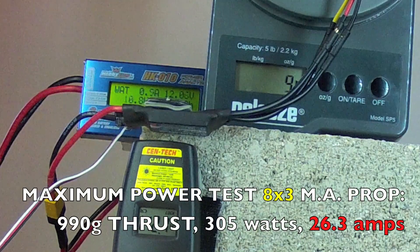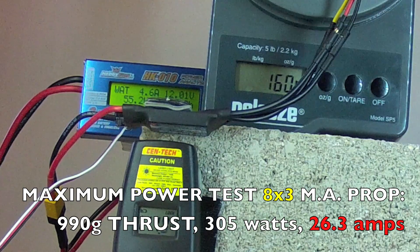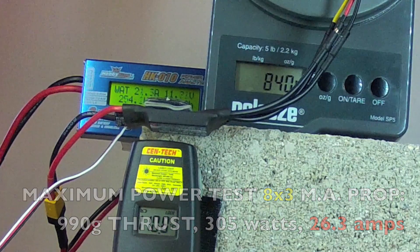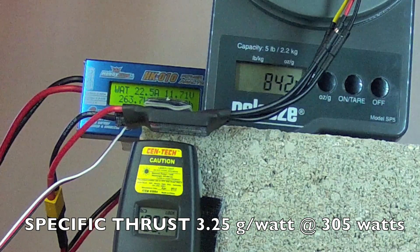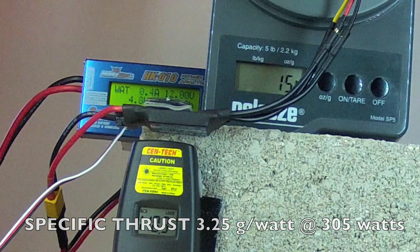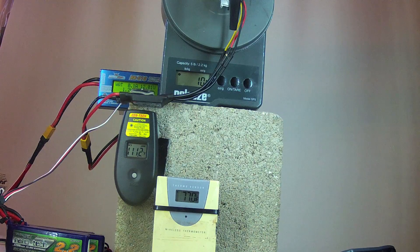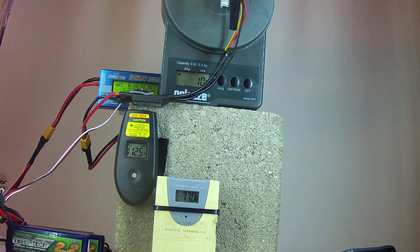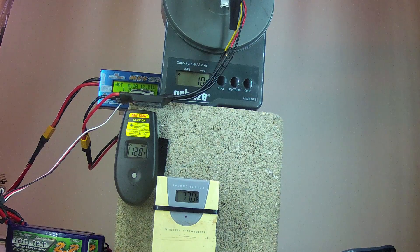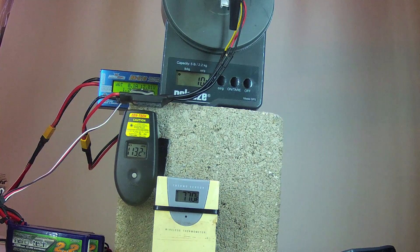The 6x3 master airscrew prop generates more thrust for the same amount of watts. Notice the amp draw is slightly higher for the same wattage only because the voltage has dropped slightly in the battery supply. So that was 950 plus grams of thrust. That's a little bit better, which is what would be expected as this prop tends not to stall with less pitch. Now I'll do the 100 watt test for grams.